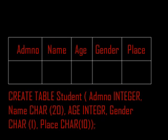The next field is name. Since name is always in alphabet, the data type is character with a maximum length of 20 characters. The next field is age. Age is always a number, so the data type is integer.